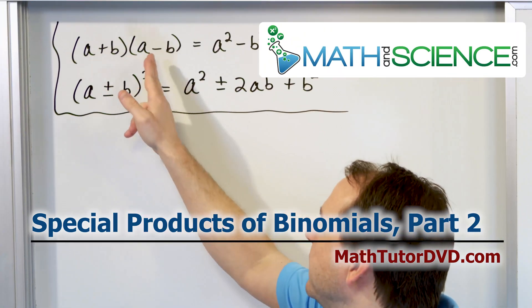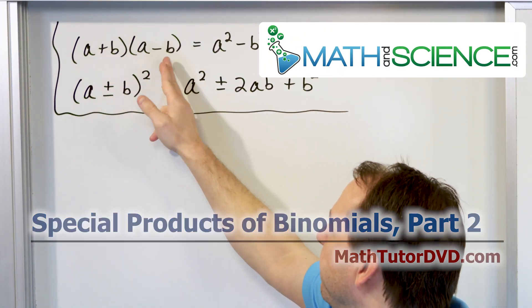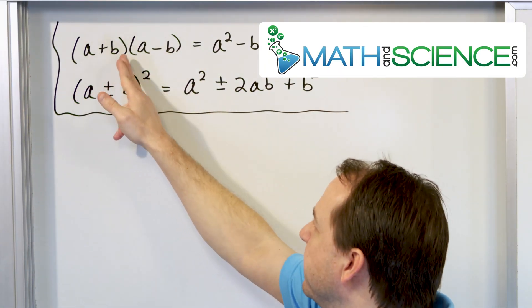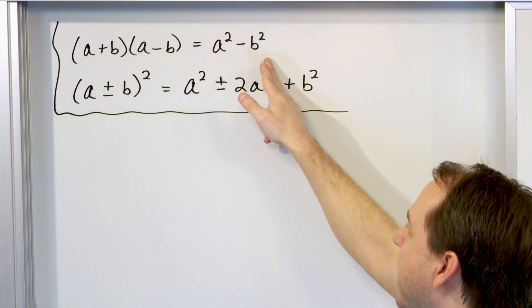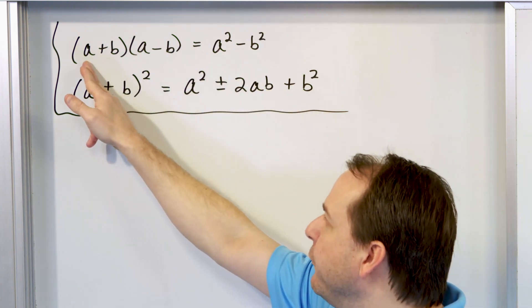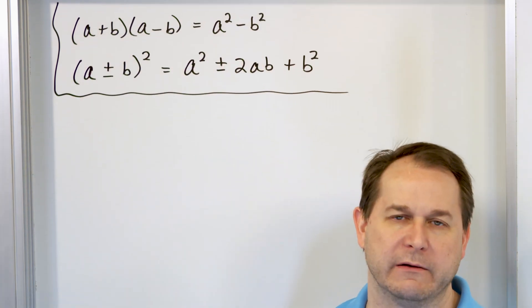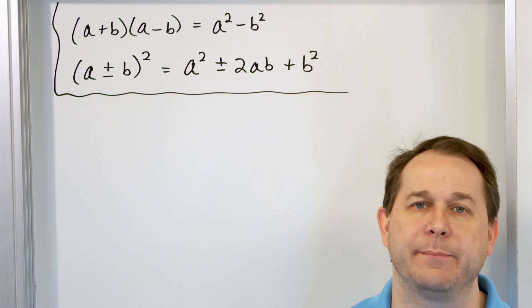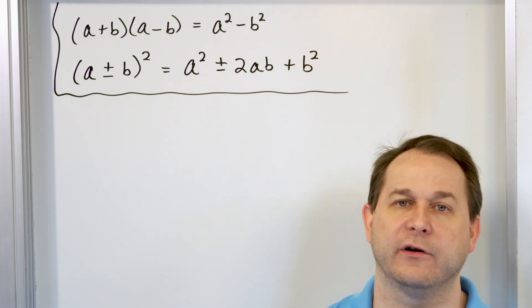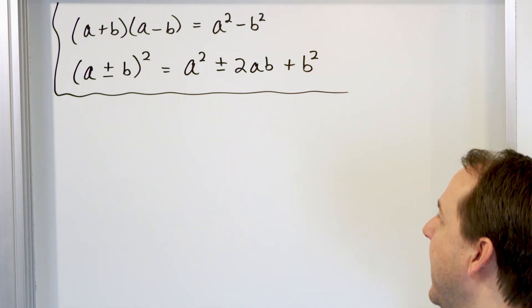The bottom line is when you have two binomials with the same exact terms but one is plus and one is minus, it will always work out to be the first term squared minus the second term squared. We showed exactly why that happens in the last section, so go back to the last section if you want to recap on that.